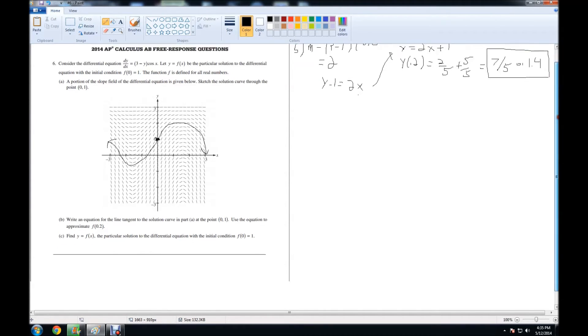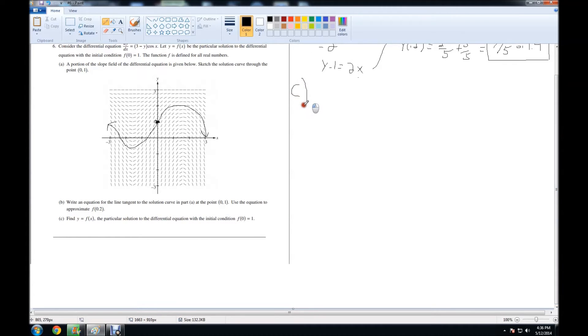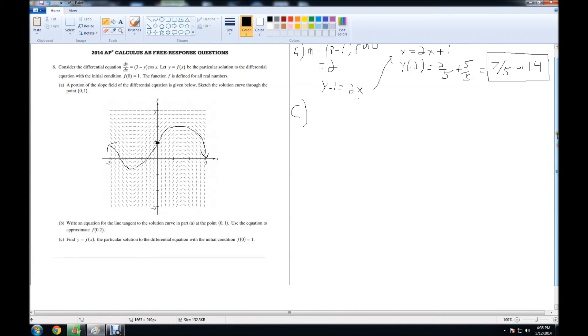Moving on to part C, which is actually the most tedious of parts for this question. Find y = f(x), the particular solution to the differential equation with the initial condition f(0) = 1. The first step is we need to combine the x's with the dx's and the y's with the dy's. So dividing by (3-y) and multiplying by dx from this differential equation that they gave us,